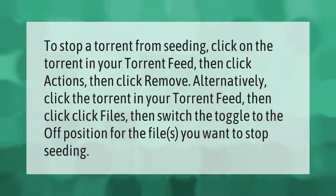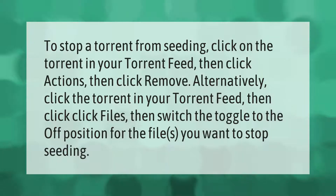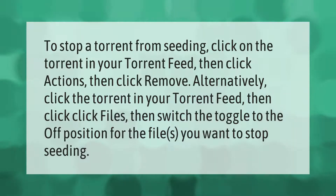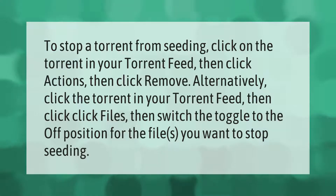To stop a torrent from seeding, click on the torrent in your torrent feed, then click Actions, then click Remove. Alternatively, click the torrent in your torrent feed, then click Files, then switch the toggle to the off position for the files you want to stop seeding.